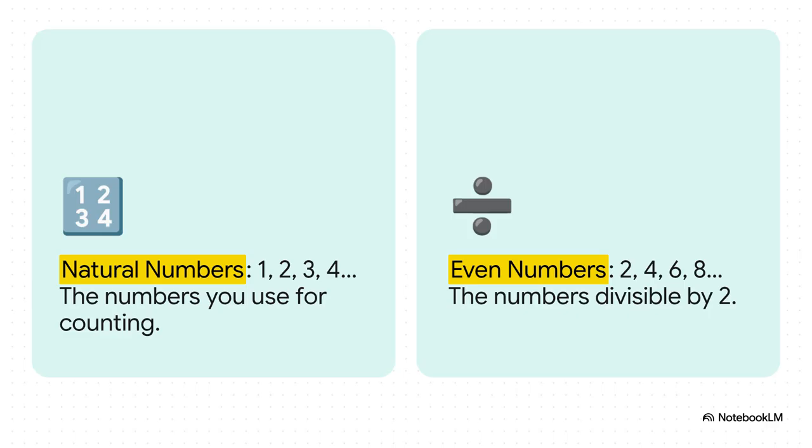One, two, three, and so on. Forever. On the other team, you've got just the even numbers. Two, four, six. Forever. Now, common sense screams that there have to be twice as many natural numbers as even numbers, right? But Cantor had this clever idea.